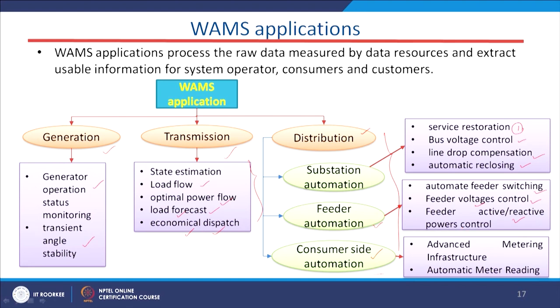For customer-side automation, we have advanced metering infrastructure (AMI) and automatic meter reading (AMR). These have already been discussed in the substation automation section. Using this infrastructure, we can monitor power at the customer premises for further analysis.